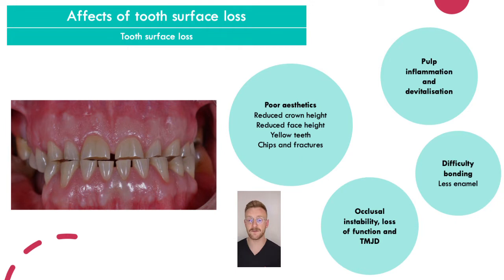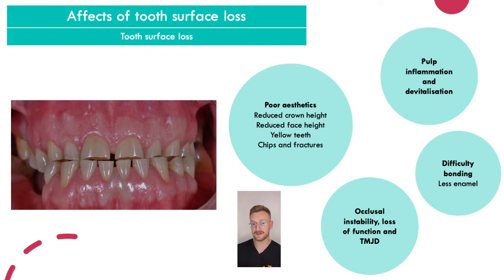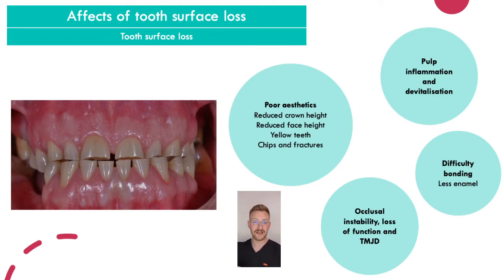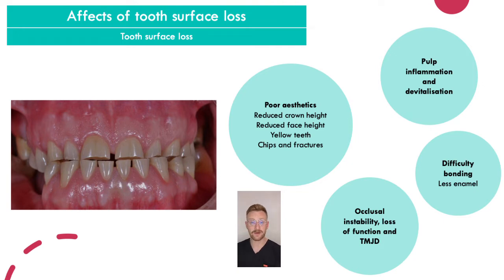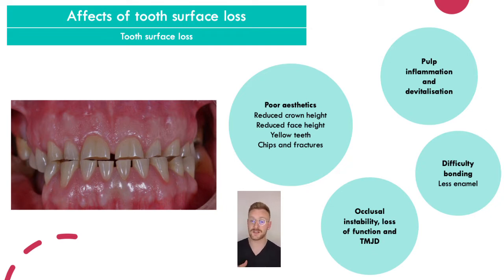The effects of tooth surface loss on a patient: the number one complaint is poorer aesthetics. This comes from reduced clinical crown height — teeth look shorter. When a patient bites together, they overclose, shortening their facial profile and reducing face height. Teeth can also appear more yellow because wearing away the translucent enamel exposes the yellower dentine underneath. Patients also come in with chips, fractures, and uneven teeth.